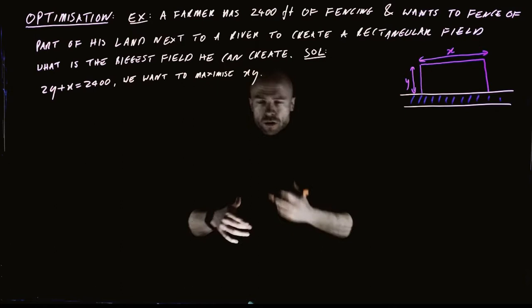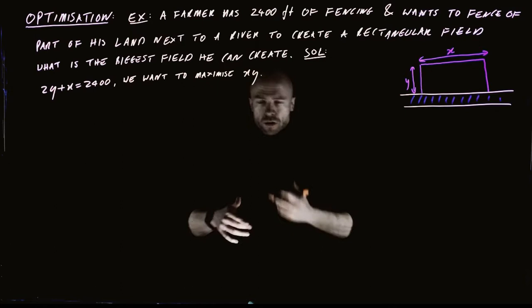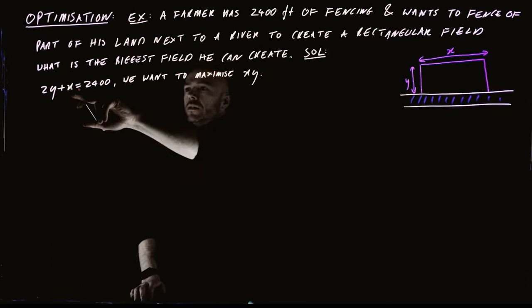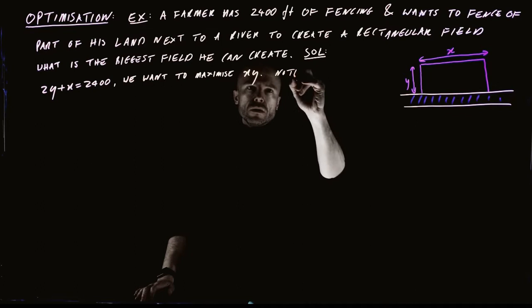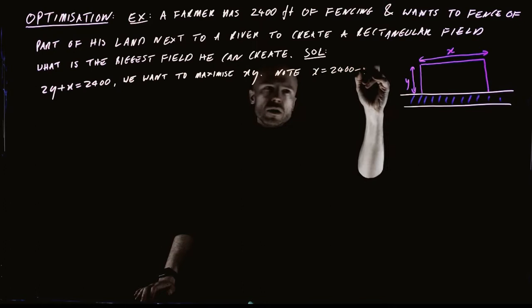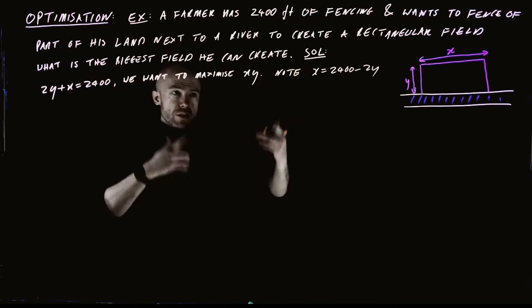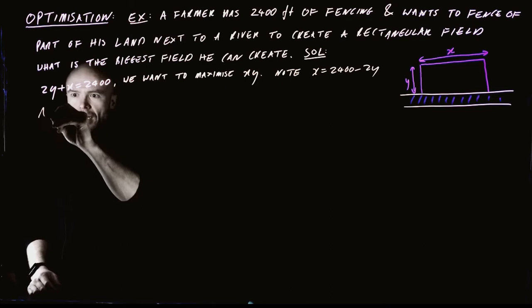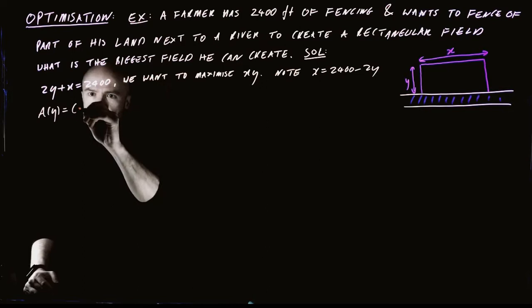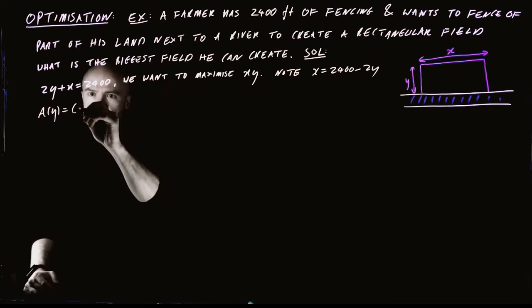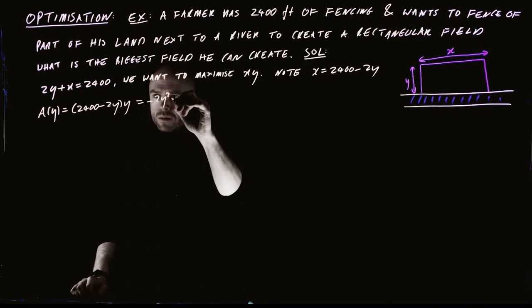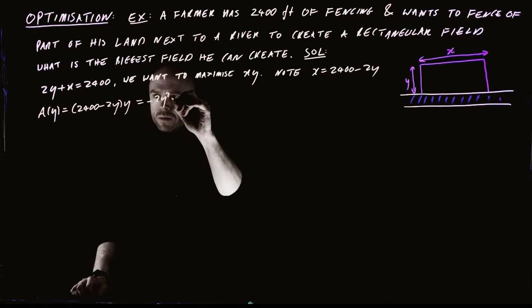This is a function of two variables, but we have a constraint which connects x and y, so we can rewrite the constraint to express x as a function of y. Note that x equals 2,400 minus 2y. Therefore, we can express the area as a function of y alone: A(y) equals (2,400 minus 2y) times y, which gives minus 2y squared plus 2,400y.